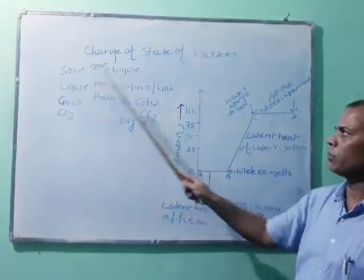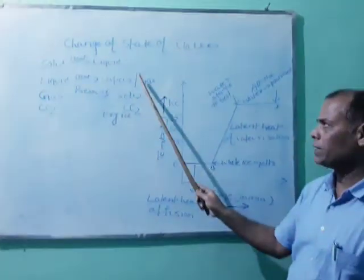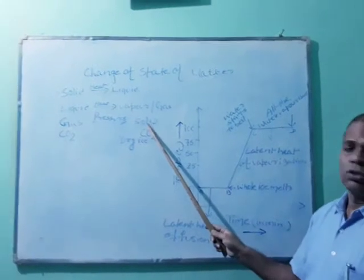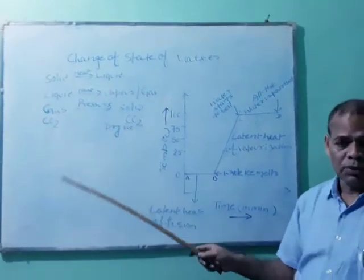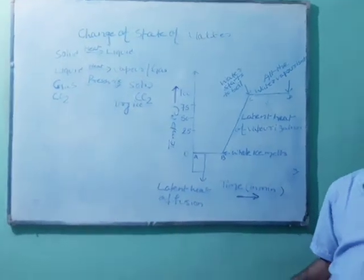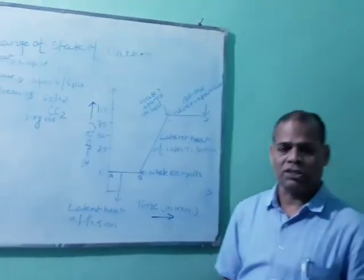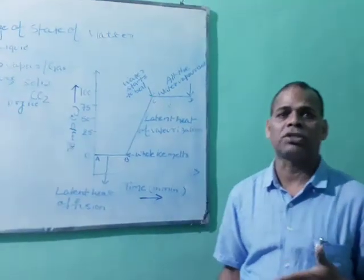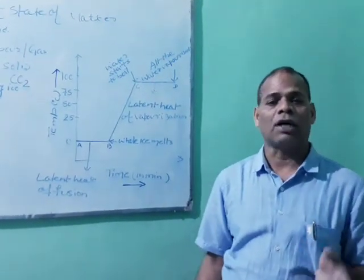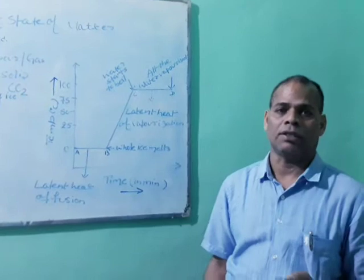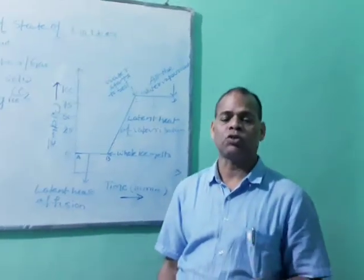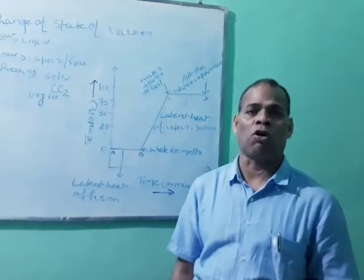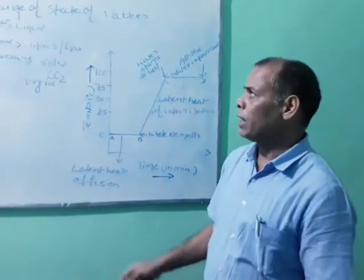Solid to liquid, liquid to gas or vapor, gas to solid. By changing the temperature, by changing the pressure, or by changing both temperature and pressure, we can convert one form of matter into another form.